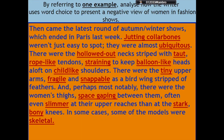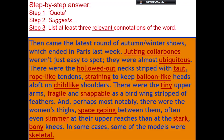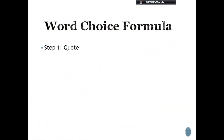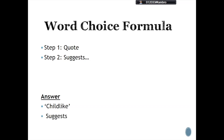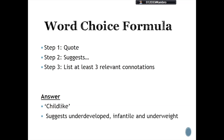We can now see these identified on the screen. The question has been changed to be more in line with a higher past paper: 'By referring to one example, analyse how the writer uses word choice to present a negative view of women in fashion shows.' To answer this we apply the word choice formula. Step one — quote the word; the word chosen is 'childlike'. Step two — write 'suggests' after your chosen word. Step three — list at least three relevant connotations: underdeveloped, infantile and underweight. That would be enough to gain one mark in a higher close reading paper.